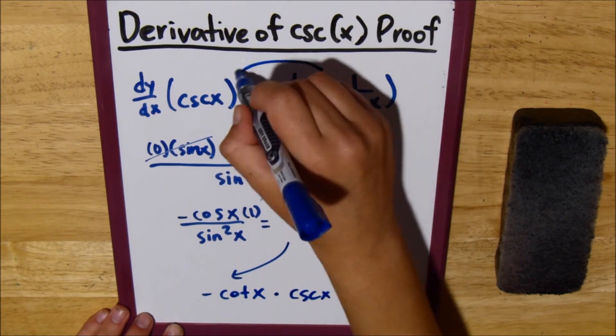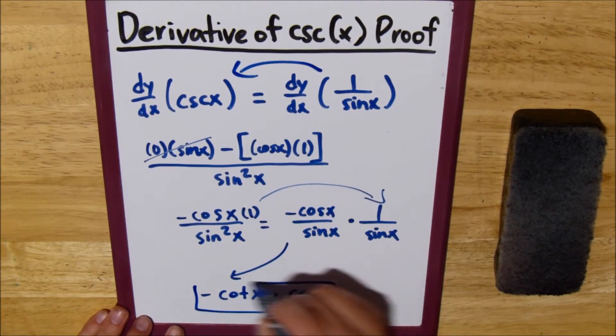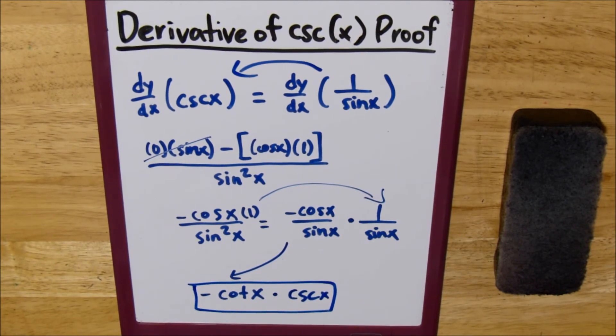See? From up here. And that is the derivative of cosecant of x. It's pretty simple.